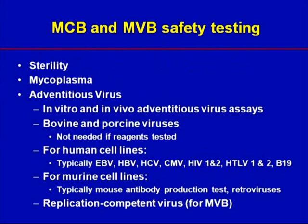Cells and vectors should be banked to minimize changes over time and to enhance the safety and consistency of your product. A number of safety tests need to be performed on your master cell bank and master virus bank, including sterility, mycoplasma, and the two general virus screens for in vitro and in vivo adventitious viruses. Some of these assays can be difficult if your product is a replication-competent virus — if your product interferes with any of these assays, please talk to us about how to proceed. If you use bovine serum and porcine trypsin, you'll need to test for bovine and porcine viruses unless you can document that all serum and trypsin used was tested. Bovine reagents should also be documented to be from sources free of BSE. For human cell lines and human-derived viral vectors, we ask for a standard panel of virus-specific PCR tests, including tests for EBV, HBV and HCV, CMV, HIV, HTLV, and B19.